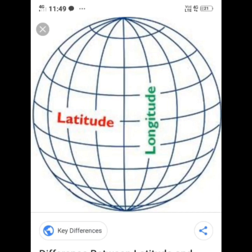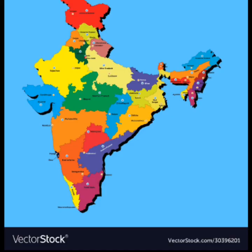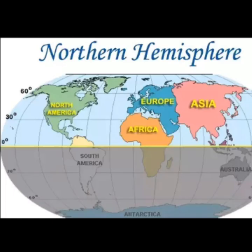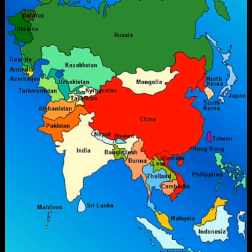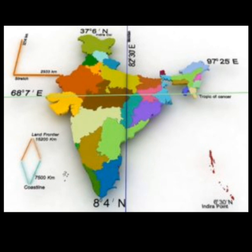These are the basic things we should know about the Earth. Now we are going to study the location of India. India is lying entirely in the northern hemisphere and in the Asian continent. The mainland extends between latitude 8° 4' North and 37° 6' North, and the longitudes are 68° 7' East and 97° 25' East.